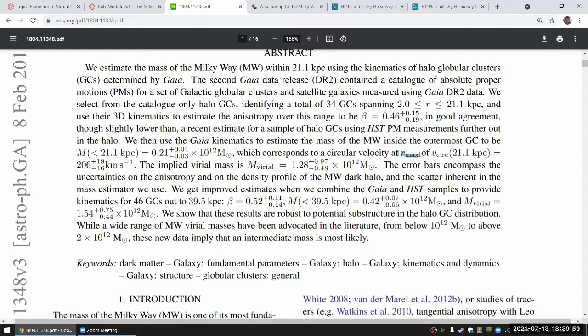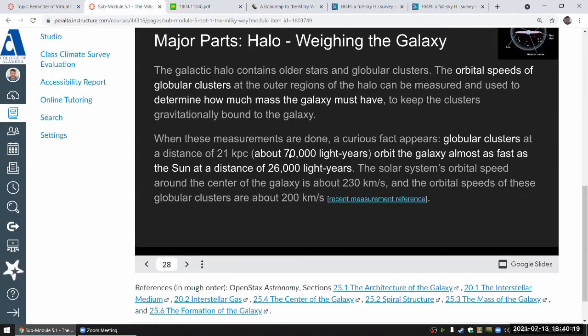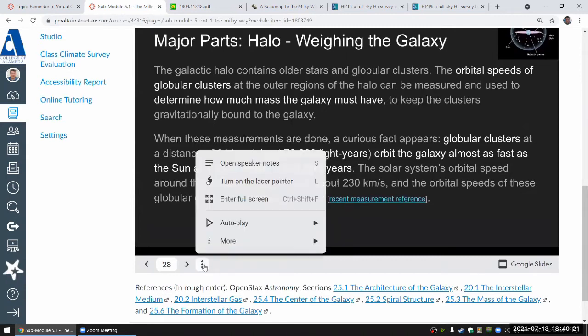About 200 kilometers per second at a particular distance. They are using kiloparsecs in the slide; I converted it to light years. So 21 kiloparsecs—that's about 70,000 light years.